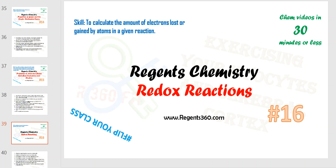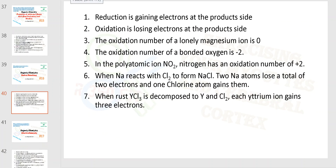Hi everyone, this is video number 16 of the Regents Chemistry curriculum, and our topic today is redox reactions. In this video, you're going to learn how to calculate the amount of electrons lost or gained by ions in a given reaction. So let's get started right away.